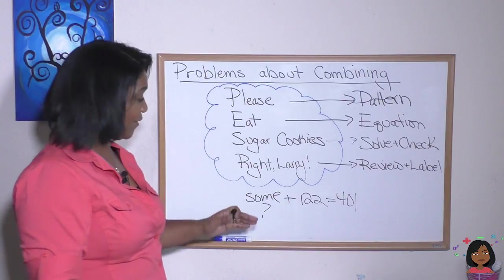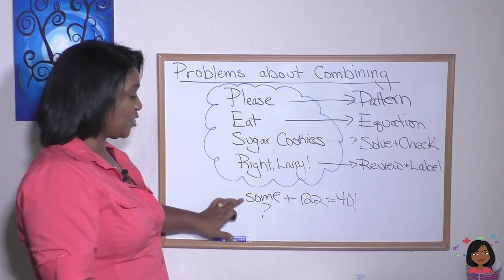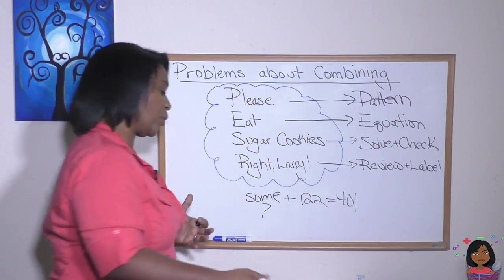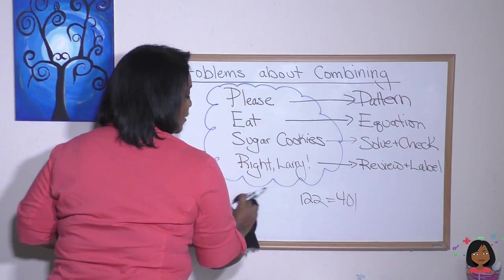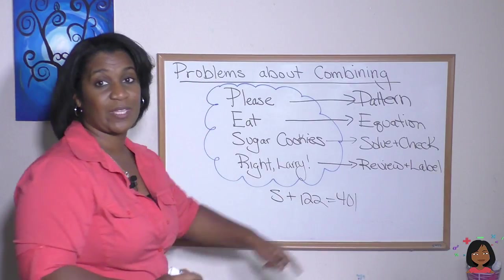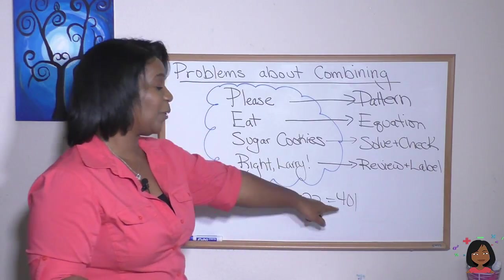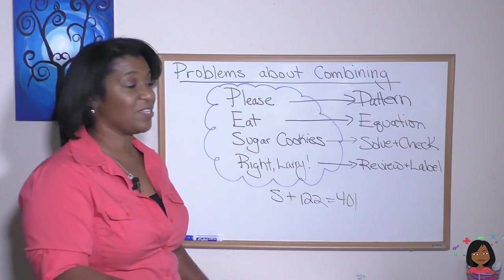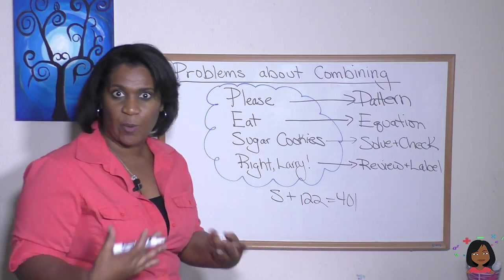The E is for equation. I've started to write one here. So we don't know what the initial was. So we're going to make that the variable. Let's make it an S for spoon. We added 122 more spoons. And now we have a total of 401. So E is for equation. Now we have an equation.